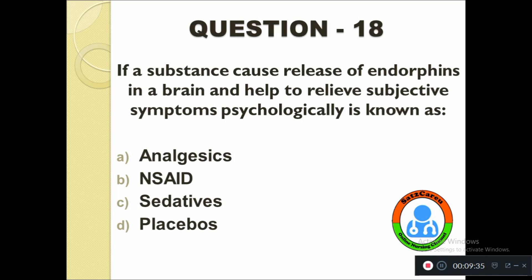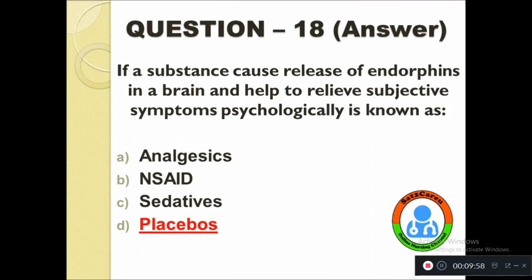Question number eighteen: If a substance causes release of endorphins in the brain and helps to relieve subjective symptoms psychologically, it is known as — option A: Analgesics, B: NSAIDs, C: Sedatives, D: Placebos. The correct answer is Placebos.